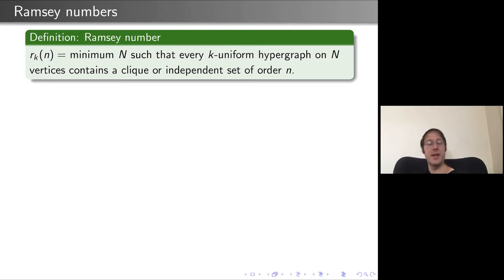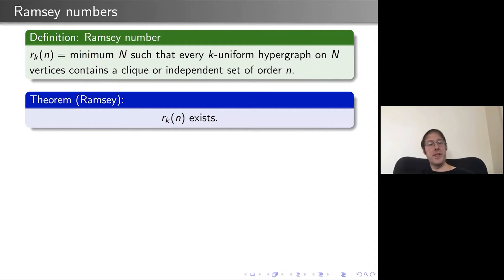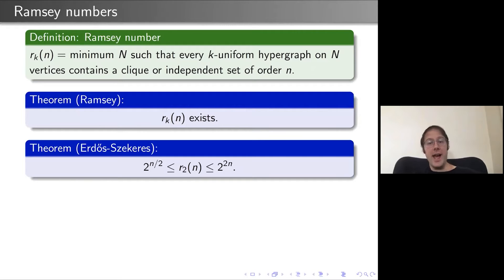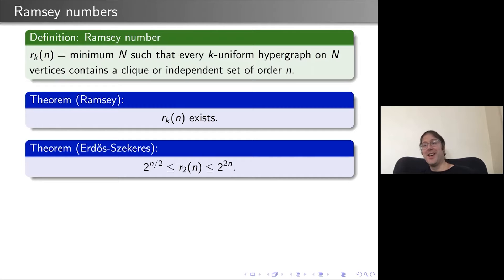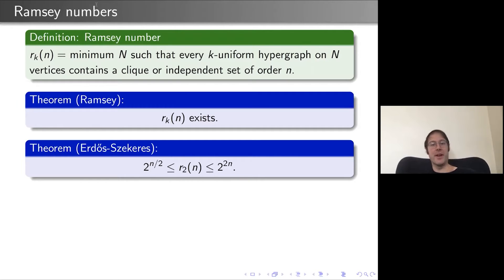The fact that these numbers exist was proved by Ramsey around 1930. In the case K=2 for graphs, we know these numbers grow exponentially in n. The upper bound is due to Erdős and Szekeres; the lower bound is due to Erdős using the probabilistic method. In the last 70+ years, these exponential constants have not been improved, and we don't even know if there is actually an exponential constant.